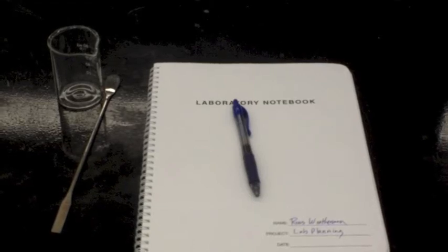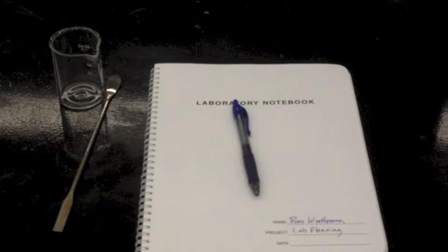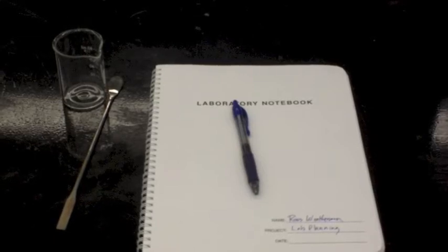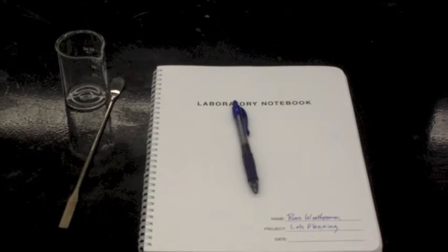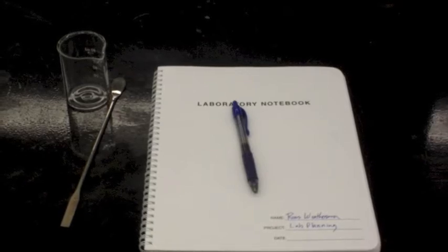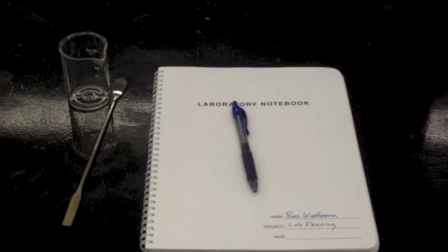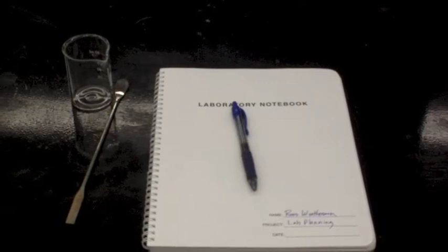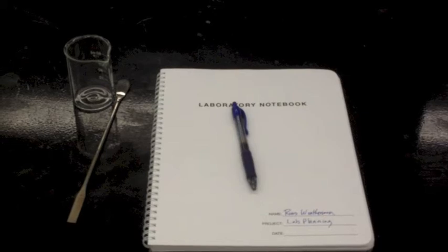You need to have something to write on—this idea that you'll always remember the number is a little bit flawed. Most people, especially when you start adding all those digits together, start to get confused, and that's pretty common. So have your thing you're going to weigh out with, the thing you're going to weigh into, your lab manual and a pen, and then you can walk up and be efficient in your balance operation.